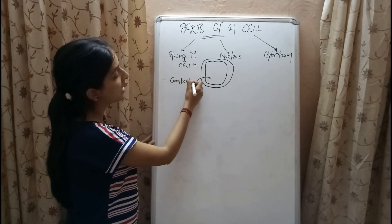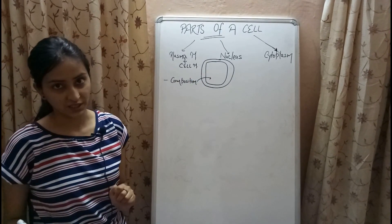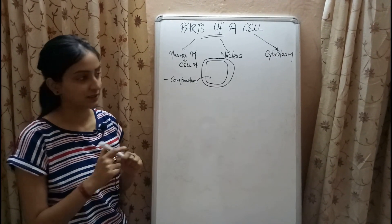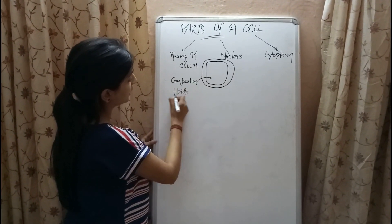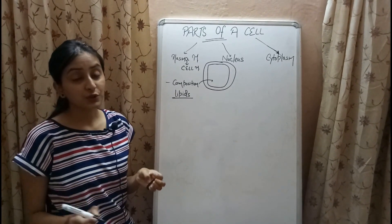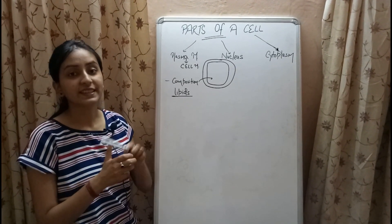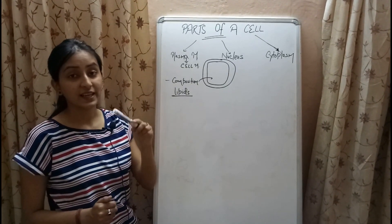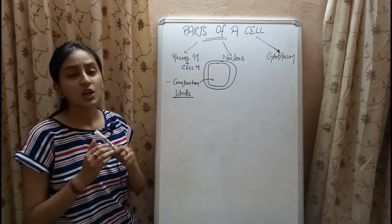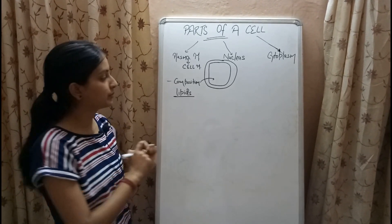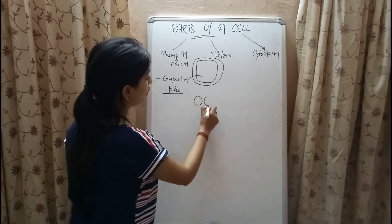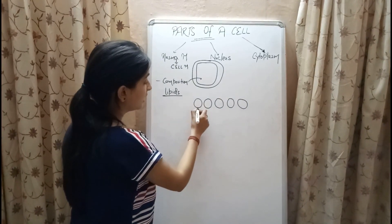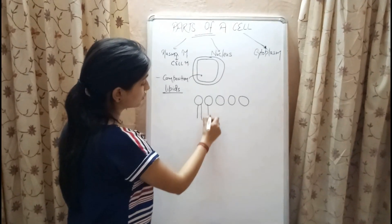Talking about composition, the plasma membrane consists of a bilayer of lipids and proteins, along with carbohydrate molecules present at the surface of the bilayer. The lipid molecules are arranged so that the hydrophilic head faces the outer surface of the plasma membrane, whereas the hydrophobic tail is present towards the inner side. Let's draw the structure of the plasma membrane.